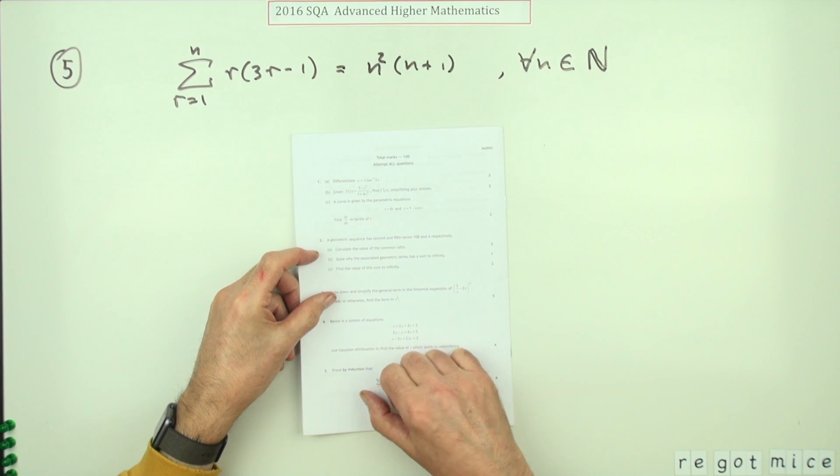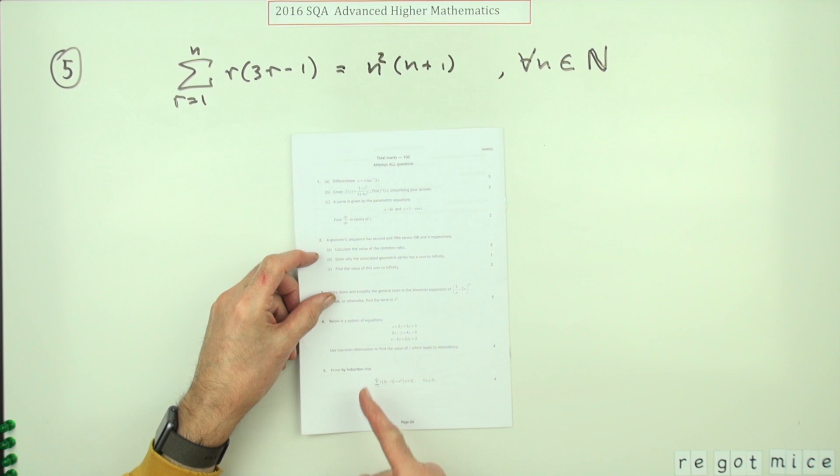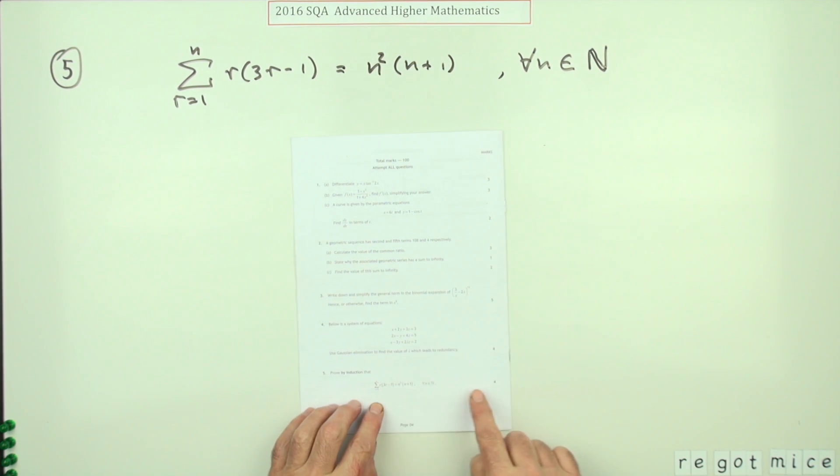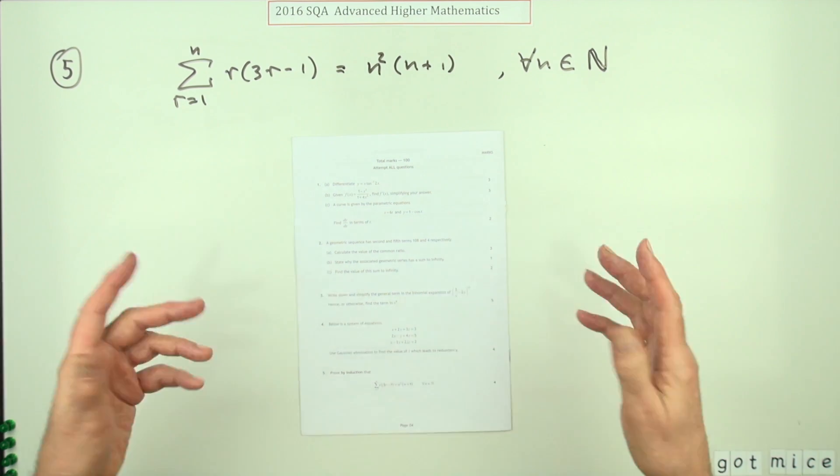Number five from the 2016 Advanced Higher Maths. Here we go: proof by induction. And you think, okay, it's just one of these summation formula ones, but it's only four marks and you've got to write all of that stuff down as well as do the wee bit of algebra.